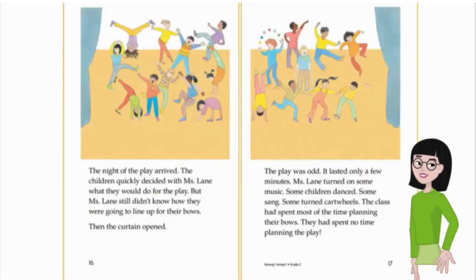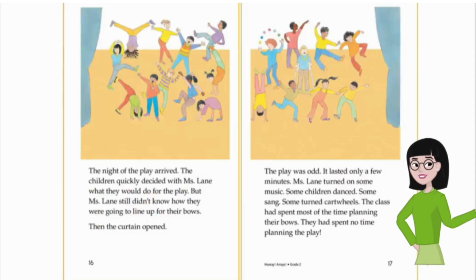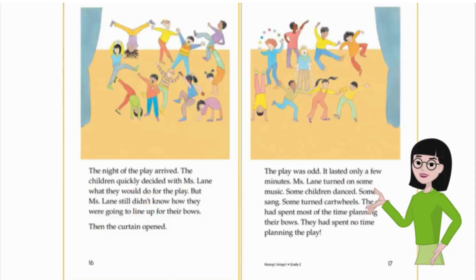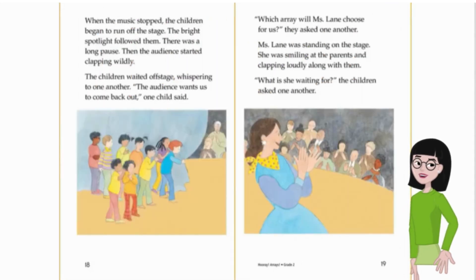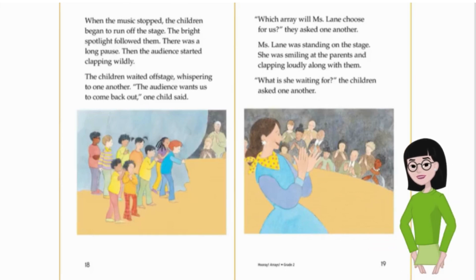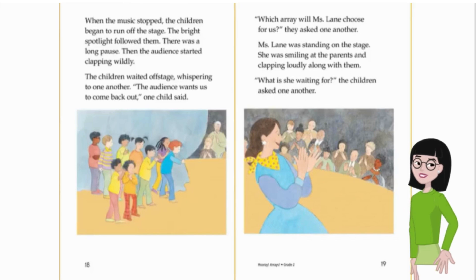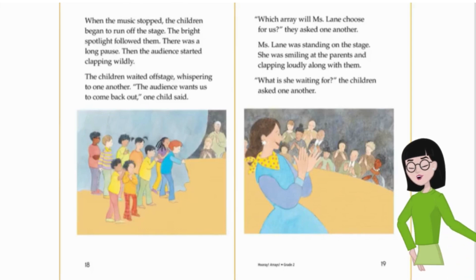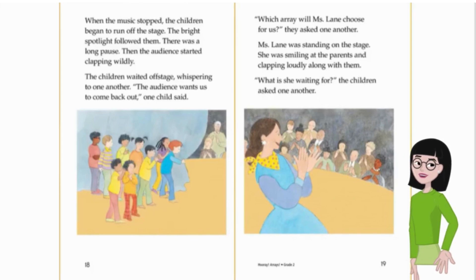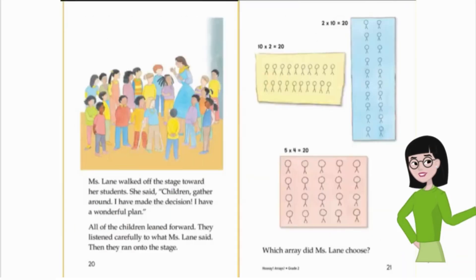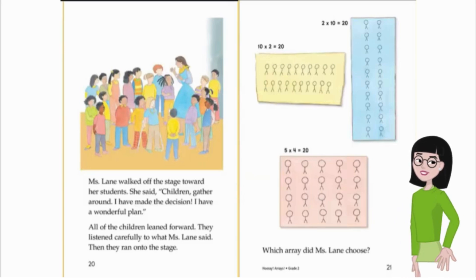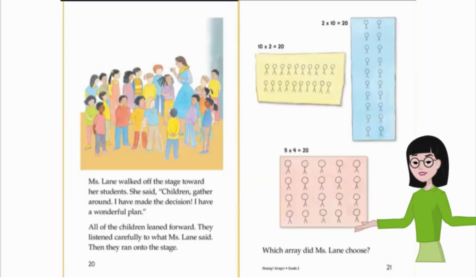After the play night arrived, the children quickly decided with Ms. Lane what they would do for the play. But Ms. Lane still didn't know how they were going to line up for their bows. Then the curtain opened. The play was odd — it lasted only a few minutes. Ms. Lane turned on some music. Some children danced, some sang, some turned cartwheels. The class had spent most of the time planning their bows and no time planning the play. When the music stopped, the children ran off stage. The bright spotlight followed them. There was a long pause, then the audience started clapping wildly. The children waited offstage, whispering: 'Which array will Ms. Lane choose for us?' Ms. Lane was on stage smiling and clapping with the audience. She walked off stage toward her students and said, 'Children, gather around. I have made the decision. I have a wonderful plan.'